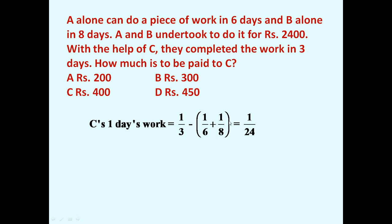C's one day work equals 1/3 - (1/6 + 1/8) = 1/24. So C can complete only 1/24 work per day. We know wages are directly proportional to the work done.